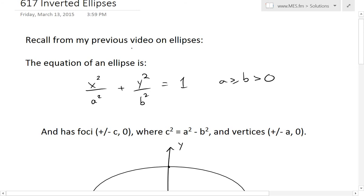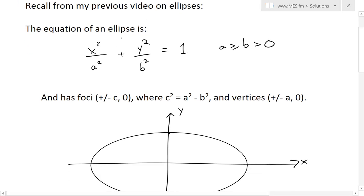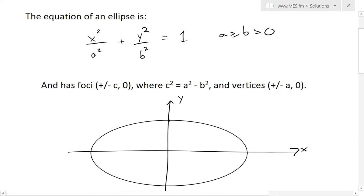Basically, for recall from a previous video on ellipses, I derived the equation of an ellipse as x squared divided by a squared plus y squared divided by b squared equals 1, where a is greater than or equal to b, and these are all greater than or equal to 0.